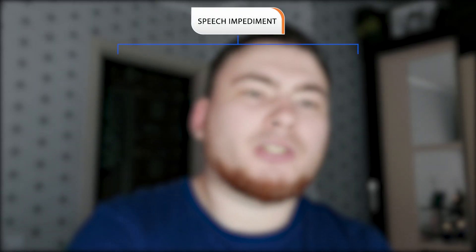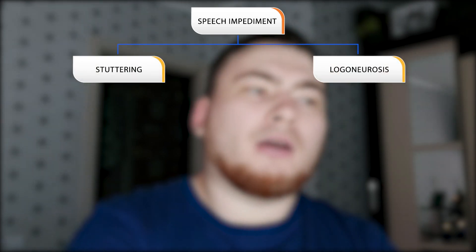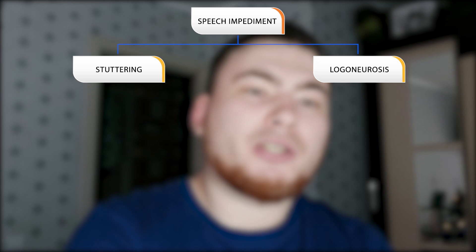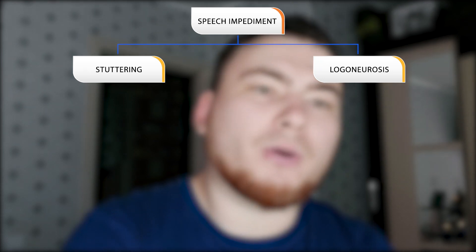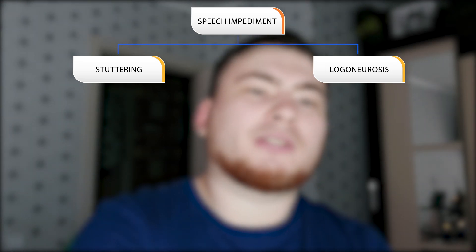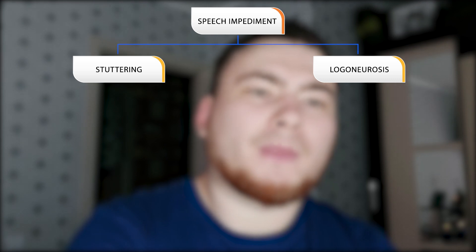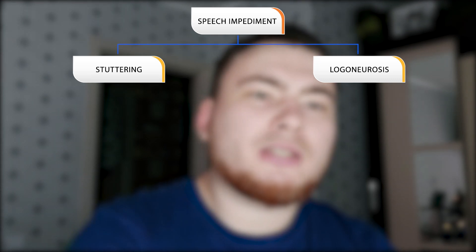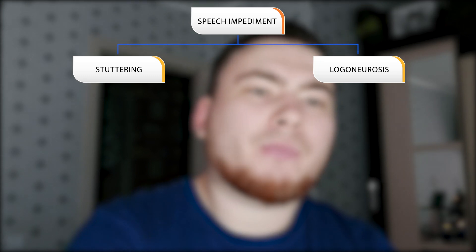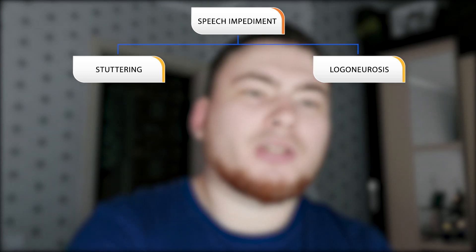The two types are mechanical stuttering and logoneurosis. In mechanical stuttering, a person stutters everywhere and every time. Stuttering consists of repeating specific sounds and syllables. The stuttering person can always say the desired phrase and make a desired sound, except that their sounds and syllables keep repeating.